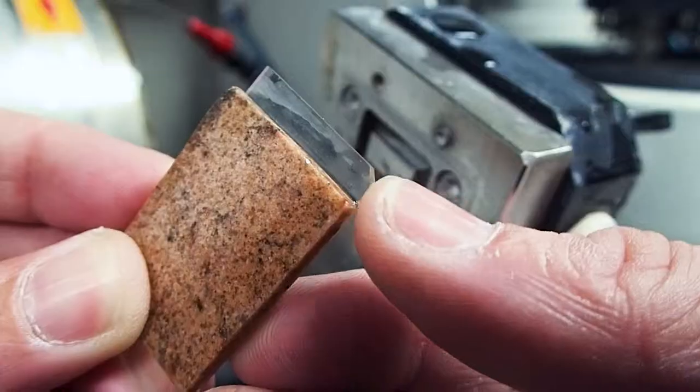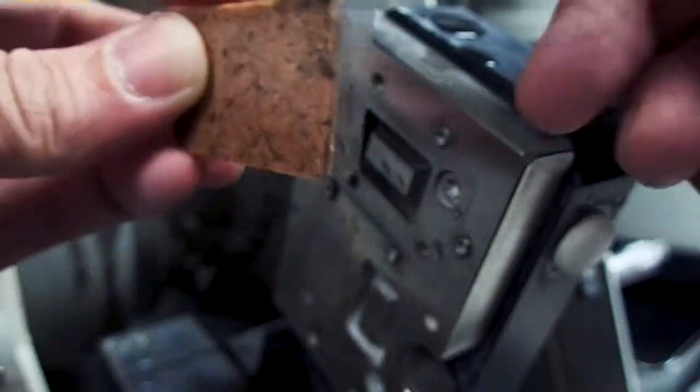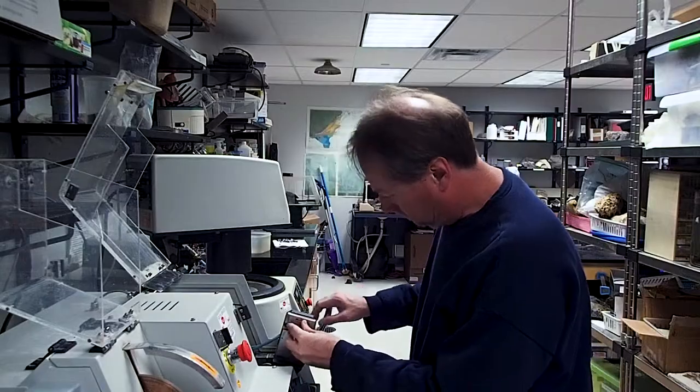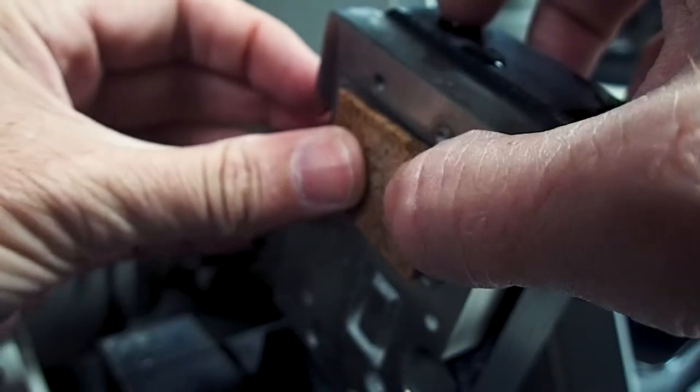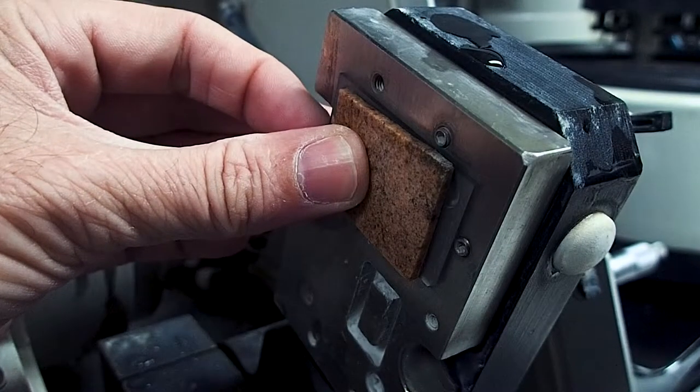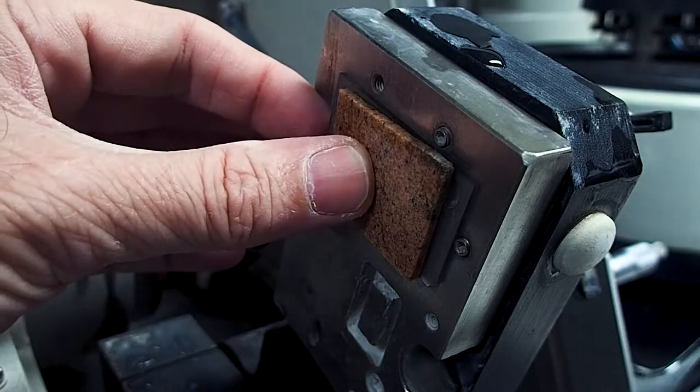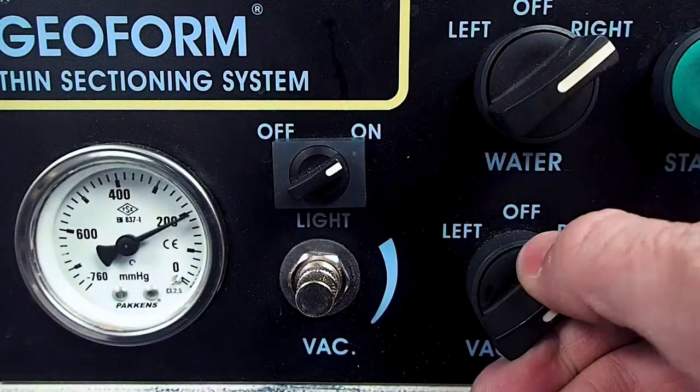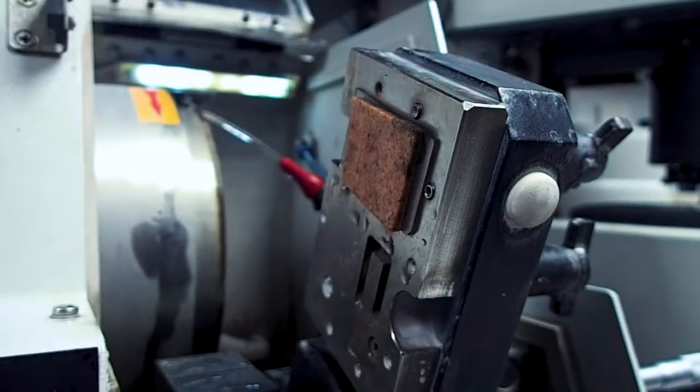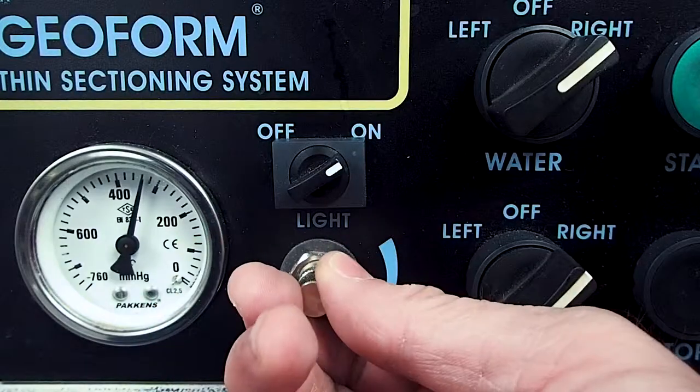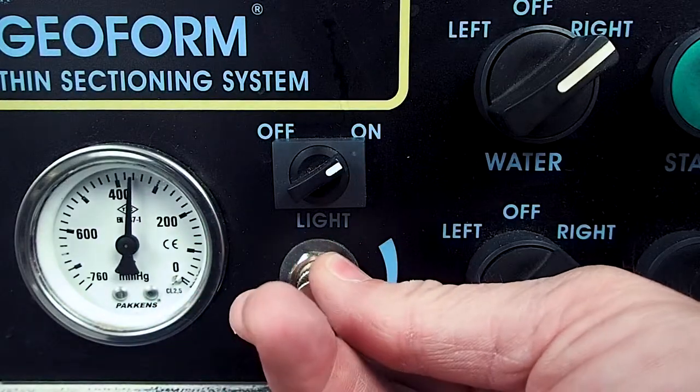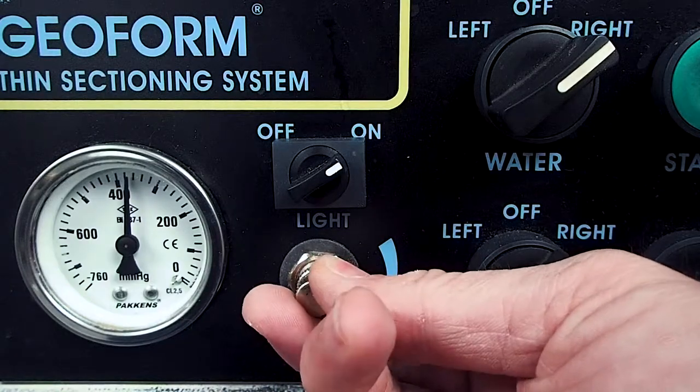Use the beveled off corner to orient the slide on the vacuum chuck in the same position that was used when the slide was frosted. This helps ensure that the rock will be ground away from the slide evenly and parallel to the surface of the glass slide. When the slide is in position, go ahead and turn on the vacuum. Before proceeding, make sure there is enough pressure to hold the sample chip securely on the vacuum chuck and adjust if necessary.